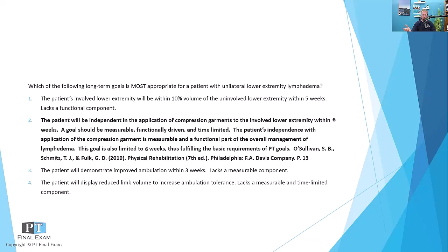So again, the correct answer is: the patient will be independent in the application of compression garments to the involved lower extremity within six weeks. Independent — that's measurable. According to the FIM score, the Functional Independence Measure, a patient can be independent, require minimum assist, maximum assist, or be fully dependent for tasks. In this case, you'd want the patient to be independent with application of compression garments within six weeks. This is related to their home exercise program and management of lymphedema — it's extremely relevant that they be on board and able to participate in complete decongestive therapy, which includes lots of compression. This goal has a much better functional component with the independent application of the compression garment.